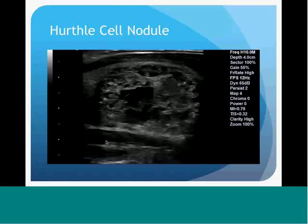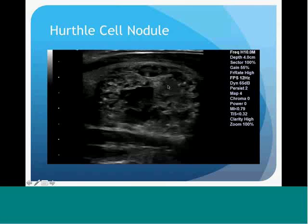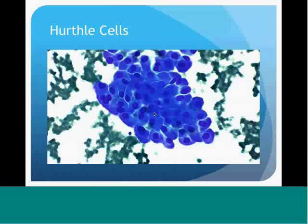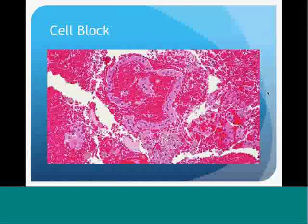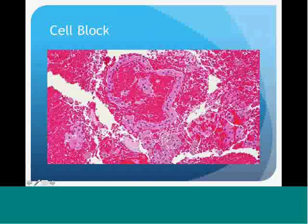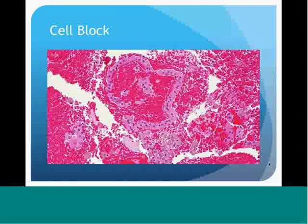Another patient had a large dominant nodule—heterogeneous, with cystic and solid features, and hyper- and hypoechoic areas. The cytologic picture on immediate Difquik assessment showed Hürthle cells, so I called this a Category 3 suspect Hürthle cell nodule. A cell block was performed showing strips of Hürthle cells with abundant pink cytoplasm, and hemosiderin-laden macrophages corresponding to the cystic or anechoic areas on ultrasound.